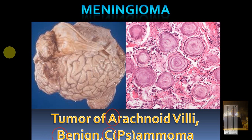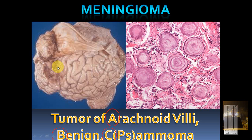Meningioma compresses brain structures and produces symptoms accordingly. A patient may present with seizures, or if the tumor is parasagittal, there may be contralateral paralysis of the limbs. It is a slow-growing tumor, so symptoms may have a duration of six months to a year. The ABC for meningioma: Arachnoid villi, Benign tumor, and psammoma bodies.